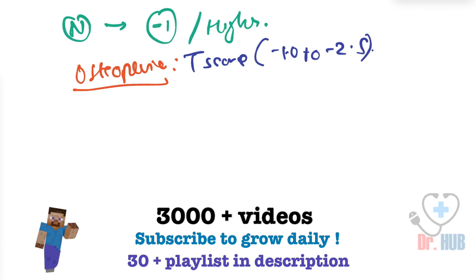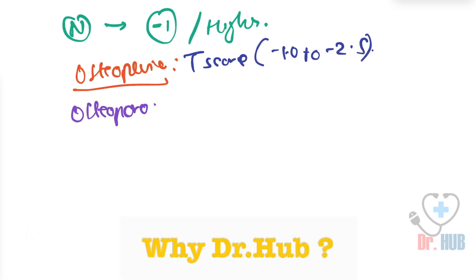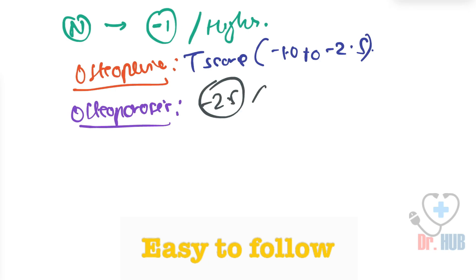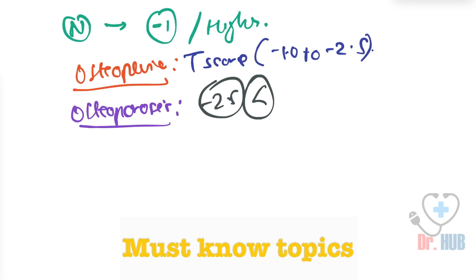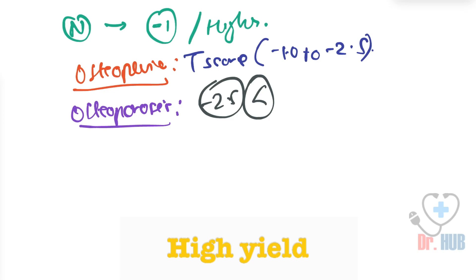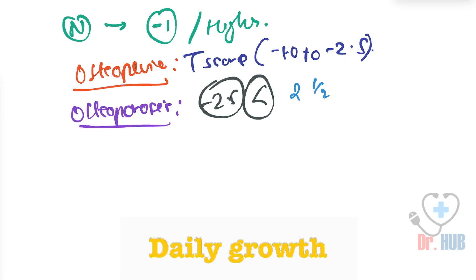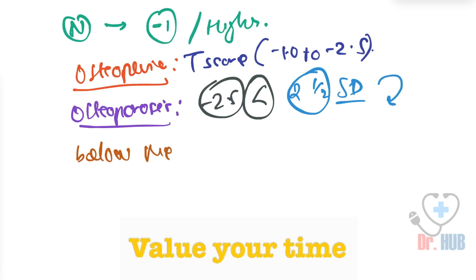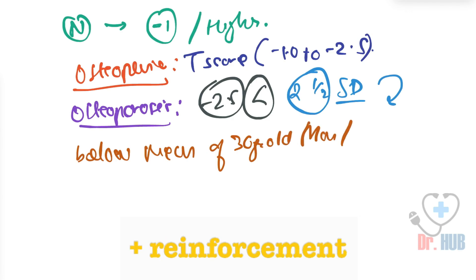Next is osteoporosis. Osteoporosis is defined as a T-score of minus 2.5 or lower, meaning the BMD has 2.5 standard deviations below the mean of a 30-year-old man or woman.